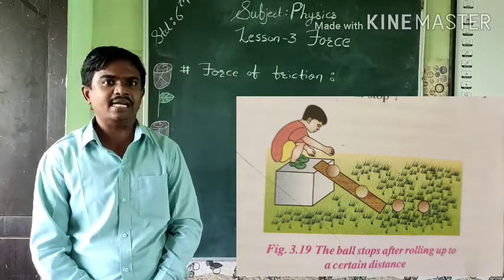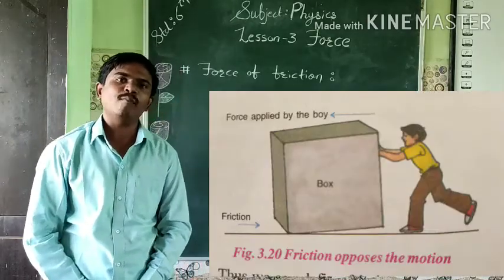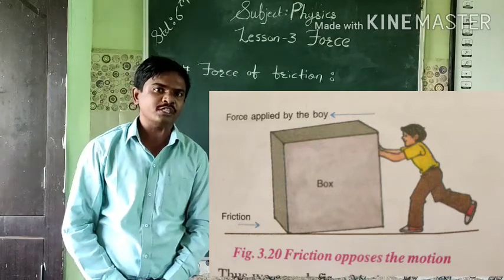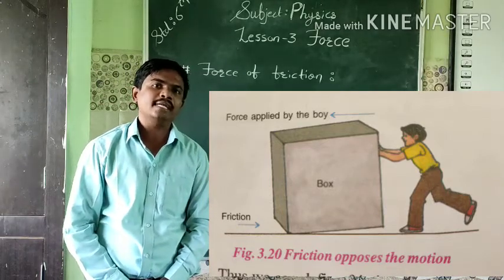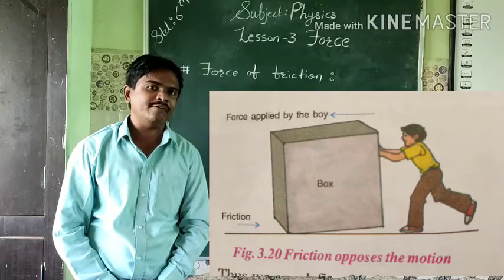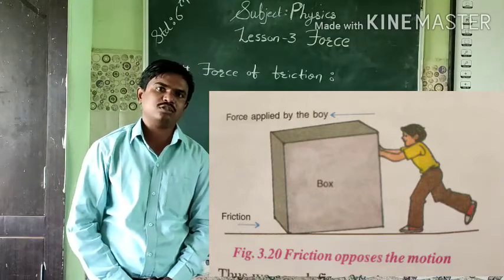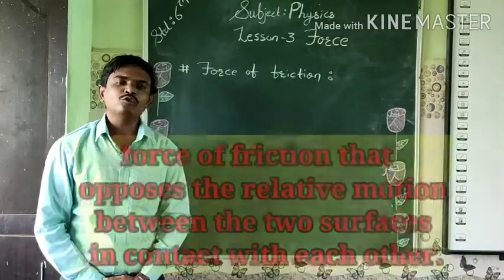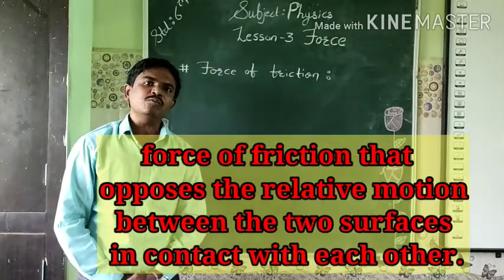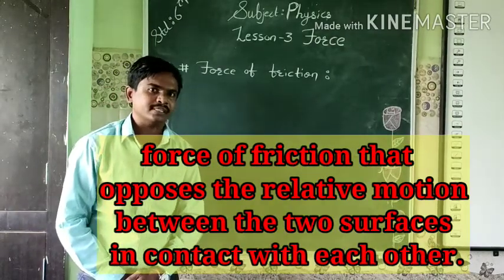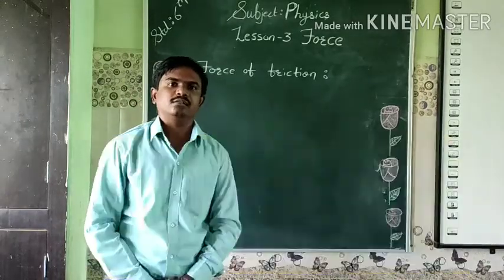So we can say that while pushing the heavy box, the force of friction opposes the motion and it is quite difficult for us to push the heavy box. The force of friction opposes the relative motion between two surfaces in contact with each other.